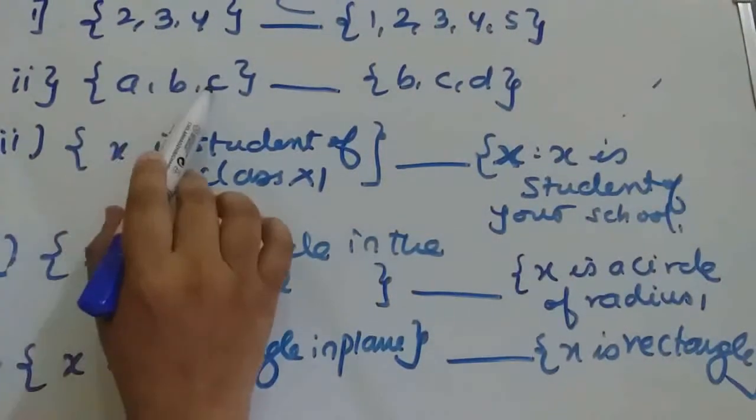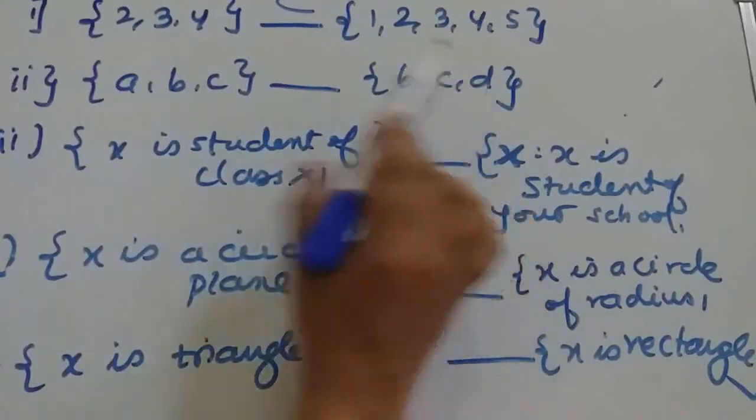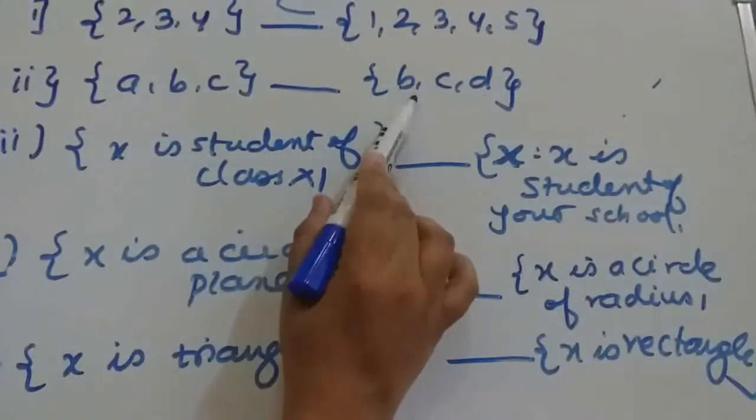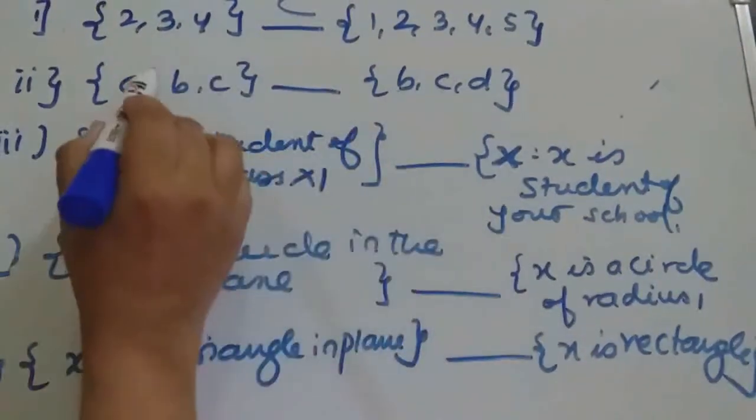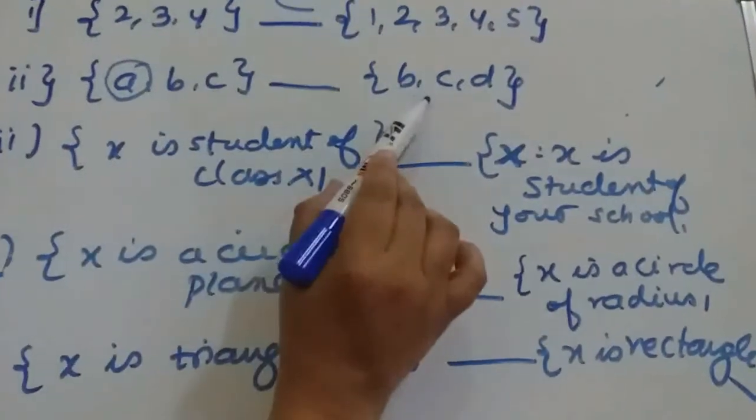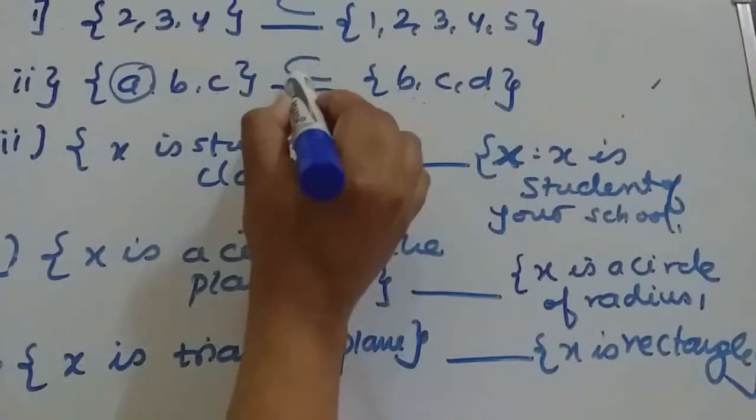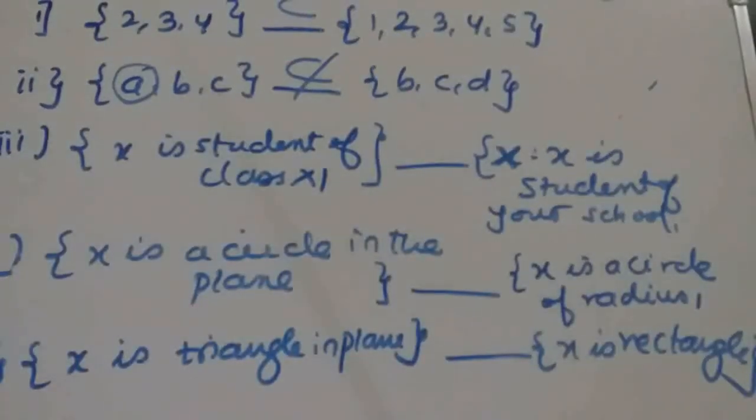Now here {A, B, C} and {B, C, D}. So B is there in the second set, C is also there. But what about A? A is not there in this particular set. So we will write it is not a subset.